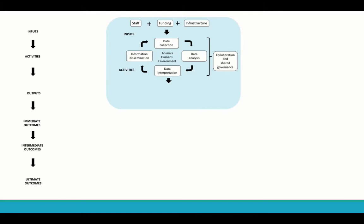So for an integrated One Health surveillance system for AMR and AMU, we will have the inputs that are staff, funding, and infrastructure. And then the flow of surveillance activities, so data collection, analysis, interpretation, and dissemination of the information. So in a One Health surveillance system, we expect that these activities integrate components from humans, animals, and the environment. Also to achieve such goal, collaboration and shared governance between sectors and disciplines is needed.